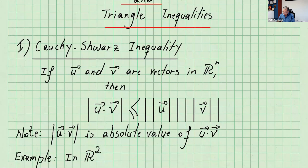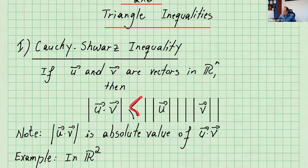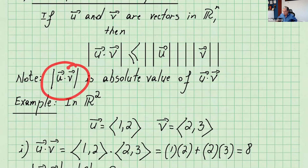It says if u and v are vectors in Rn — Rn could be R2, R3, R4 and so on — then the absolute value of the dot product is less than or equal to the product of the norms or their magnitudes. This is a product, and norms are just numbers. And just to note, that means absolute value of u dot v.